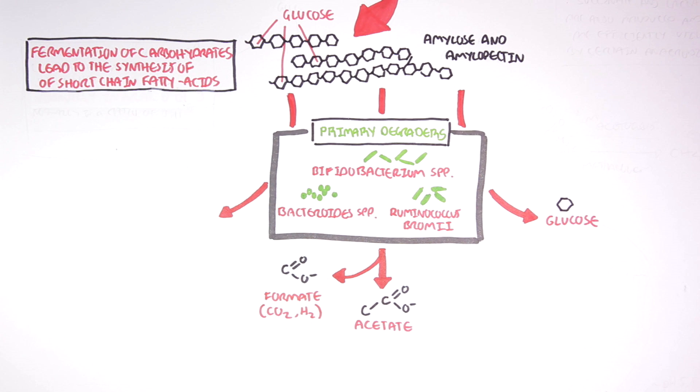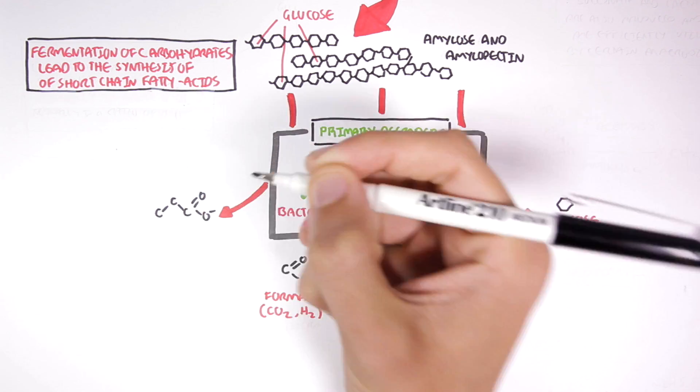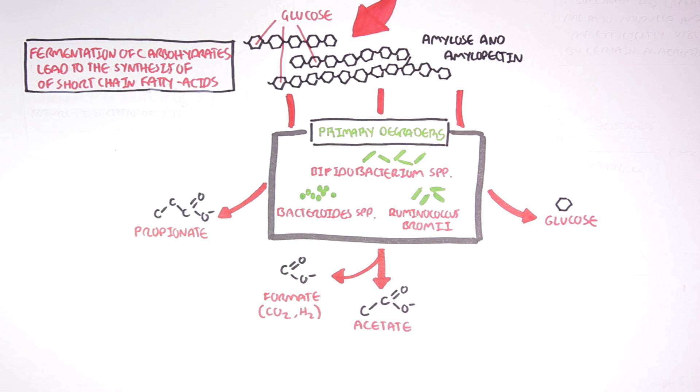Through the fermentation of glucose, the primary degraders can also produce the three-carbon short-chain fatty acid, called propionate, which also forms some gases as a byproduct.